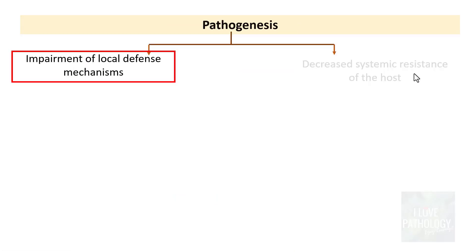The miscellaneous category includes aspiration pneumonia, lipid pneumonia, and chronic pneumonias such as tuberculosis and various chronic infections. Classification based on clinical setting is most useful for clinicians because it guides them to identify the likely implicated organisms and thereby simplifies treatment decisions.